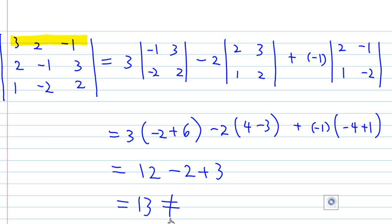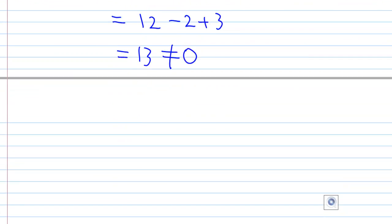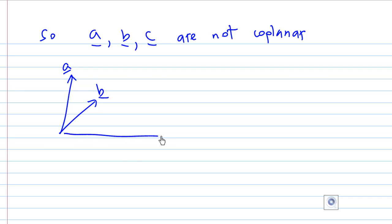13 is not equal to 0. So we conclude that a, b, c are not coplanar. That means that the volume of the parallelepiped—if you take the parallelepiped formed by a, b, and c—